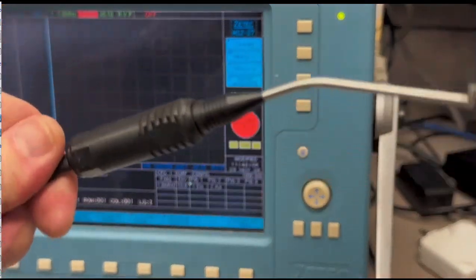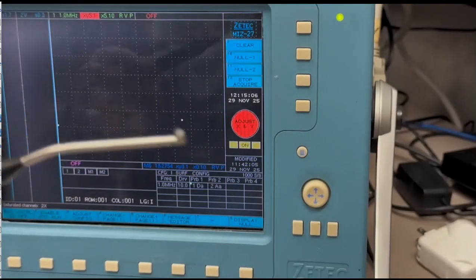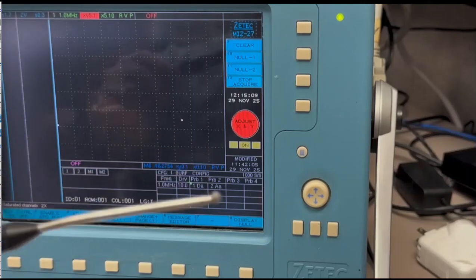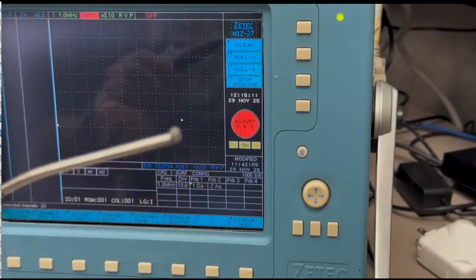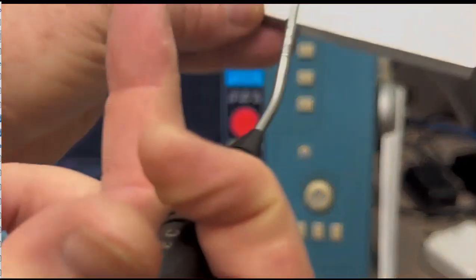Then I have a Z-Tech pencil probe. That's a tiny coil there in the head. That's because we're looking for tiny flaws. You wouldn't be looking for tiny cracks with a big wide coil. You'd miss them.